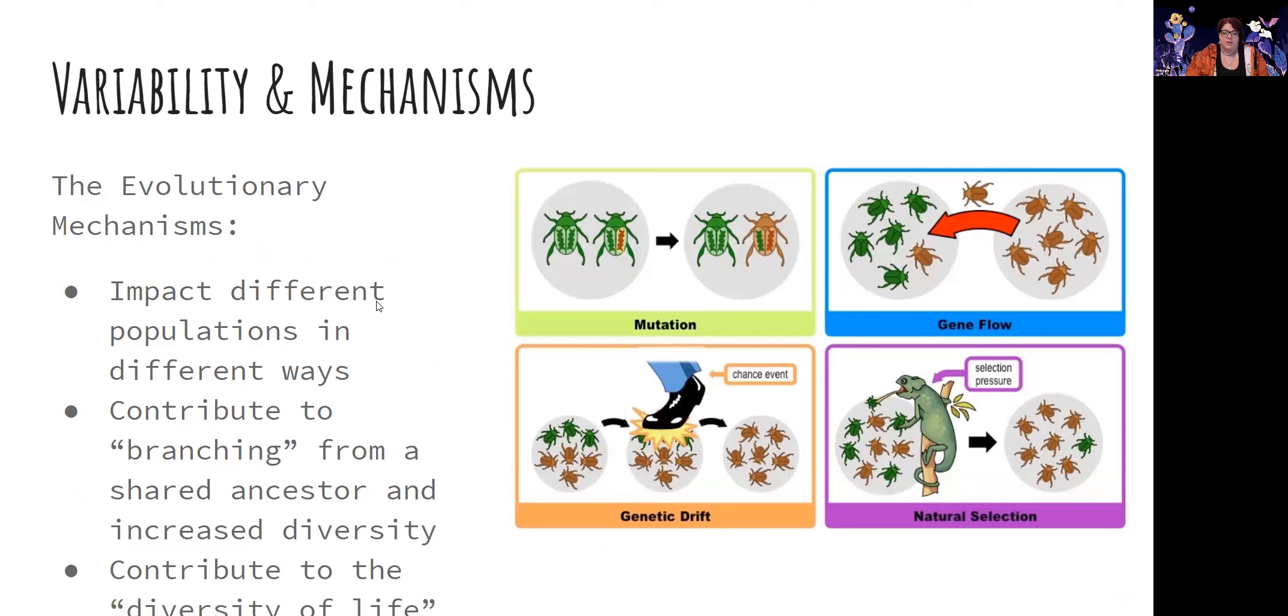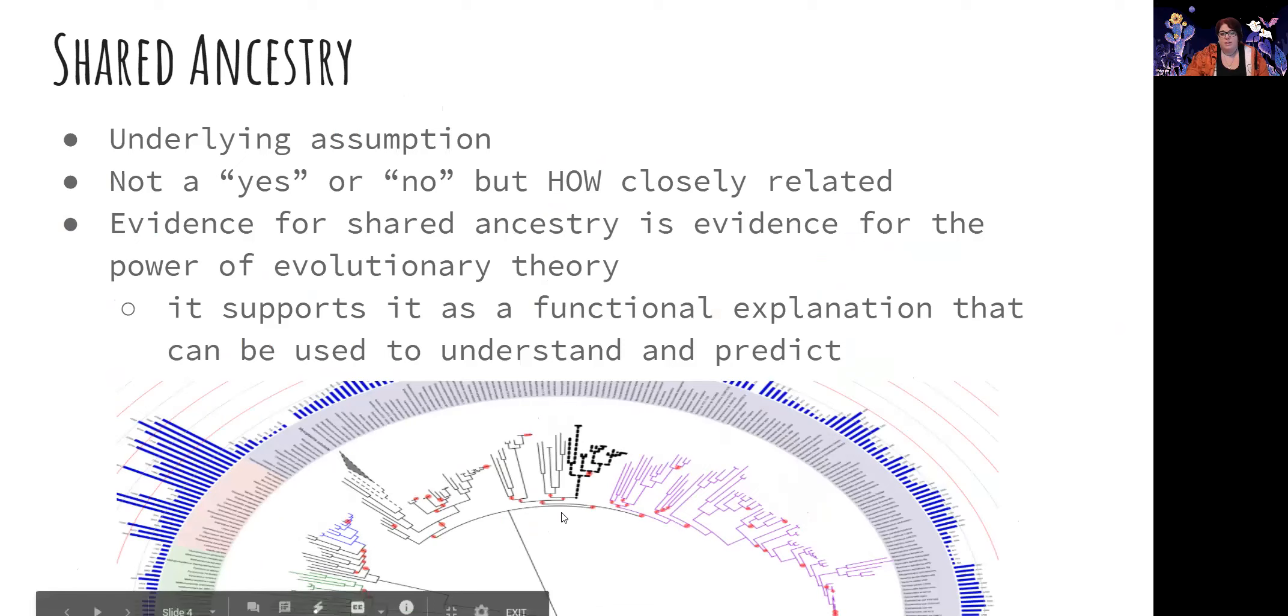So those things all give us evidence of common ancestry and why things are similar, but what we're going to look at next is how we get the diversity of life, so how we get the diverse characteristics of different organisms on the planet. So these four mechanisms will be the subject of our next parts, and these all contribute to branching from a shared ancestor. So if you think of back here, this picture, the homologous structures give us evidence of these ancestry points and the mechanisms explain how we get from these ancestry points to these diverse branches out on the outside.